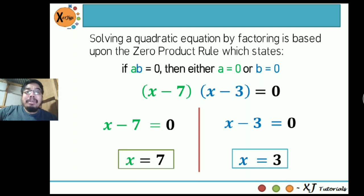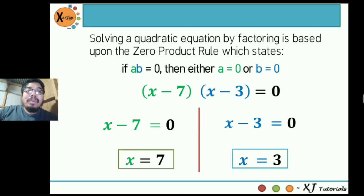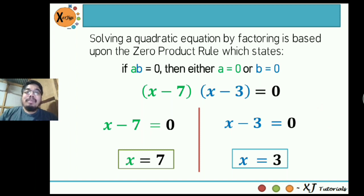So x - 7 = 0, therefore x = 7, because moving negative 7 to the right side changes its sign to positive. Next, x - 3 = 0. Since it's a negative sign and you move it to the right side, it becomes positive. So the two values of x are 7 and 3.